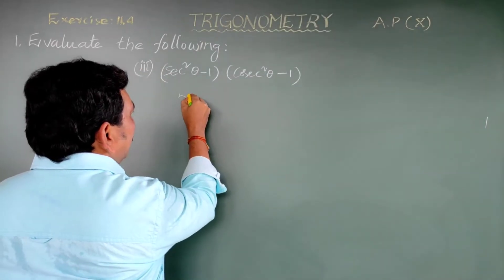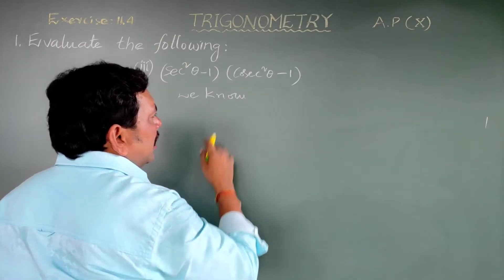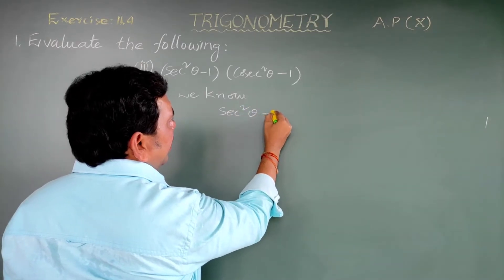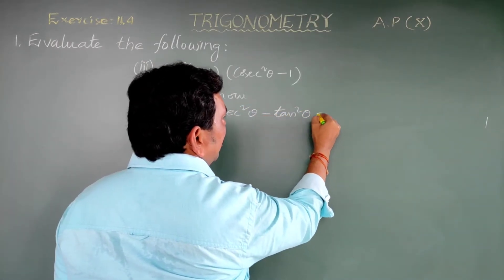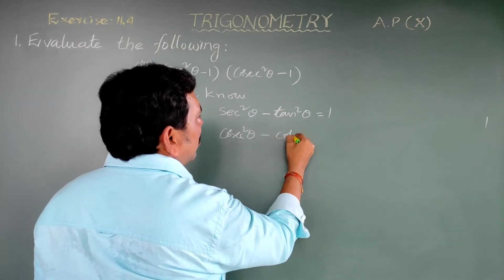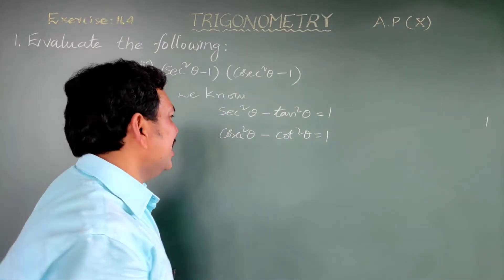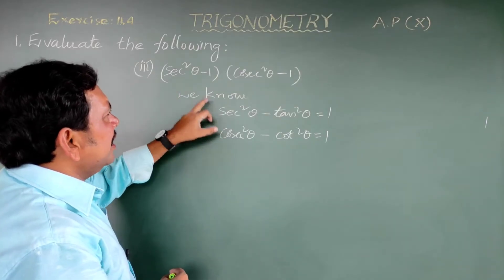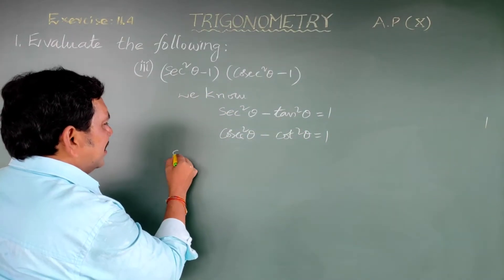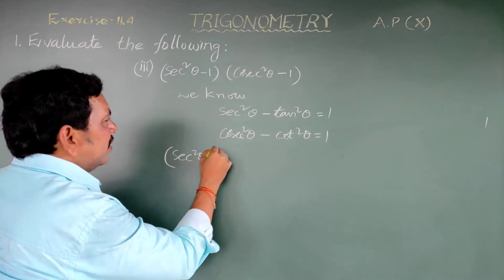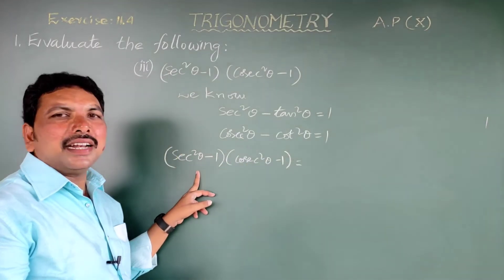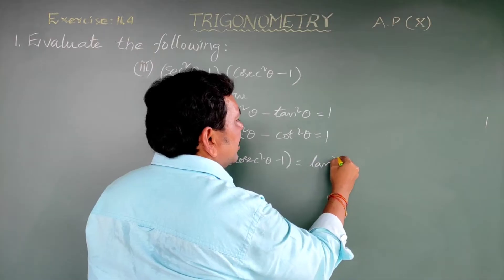We know the two trigonometric identities: sec²theta minus tan²theta equals 1, and cosec²theta minus cot²theta equals 1. So sec²theta minus 1 equals tan²theta. Write down: (sec²theta - 1)(cosec²theta - 1) equals tan²theta into (cosec²theta - 1).